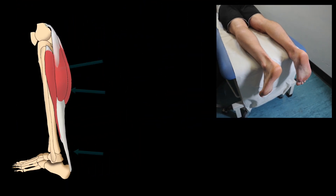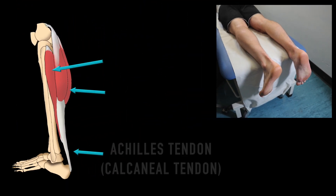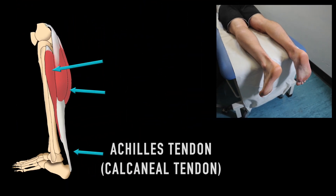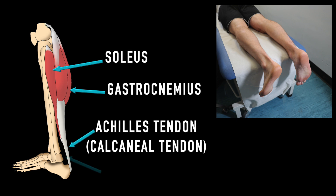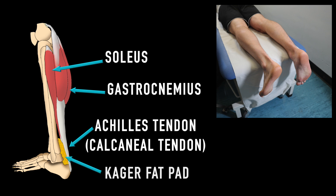Key anatomical landmarks in this assessment are the Achilles tendon, the medial and lateral heads of gastrocnemius, and the soleus muscle. Deep to the Achilles tendon is the CAGA fat pad.